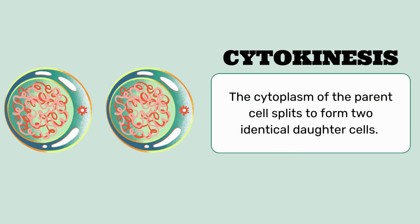It is the last stage, cytokinesis, in which the cytoplasm of the parent cell separates to form two identical daughter cells. In this diagram, you can see that in early stages the chromosomes, nucleolus, and centrioles are separate. In this stage, you can see the cytoplasm — the cell fluid — which is also separated, and two separate cells are formed.